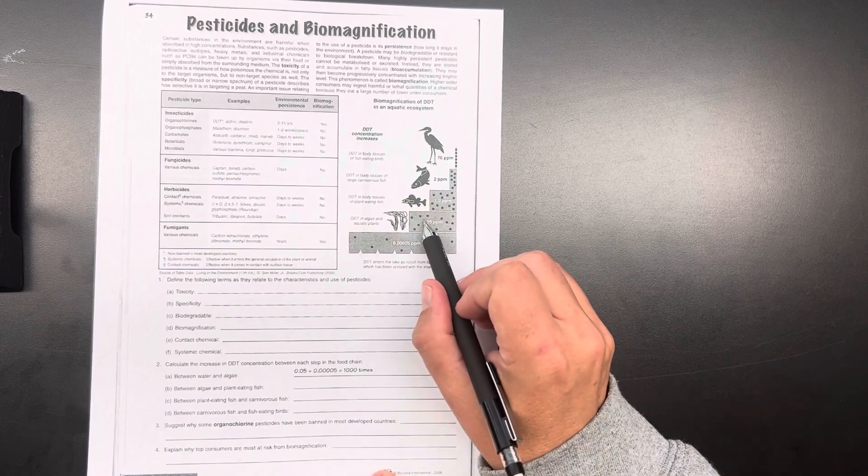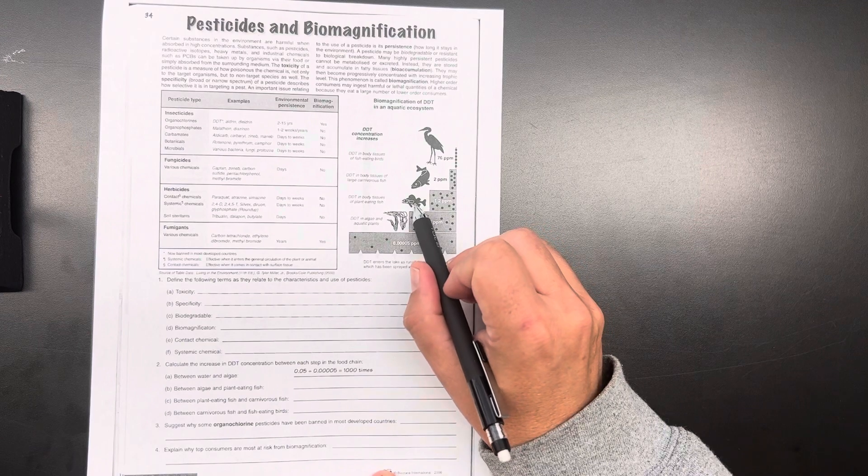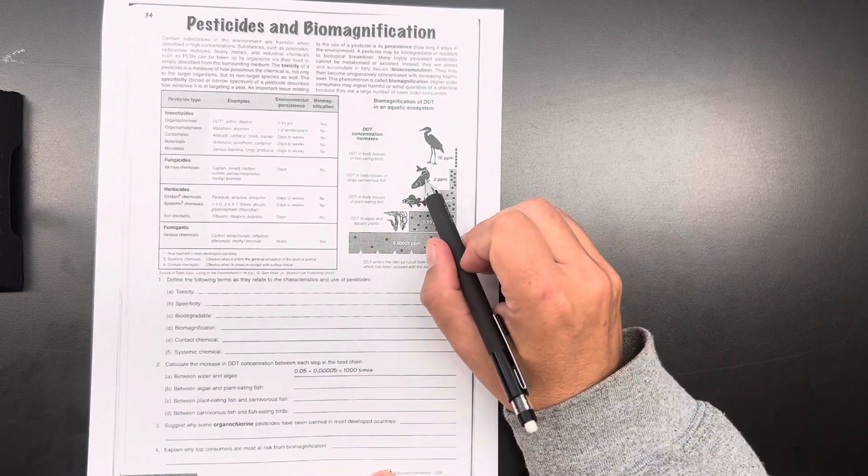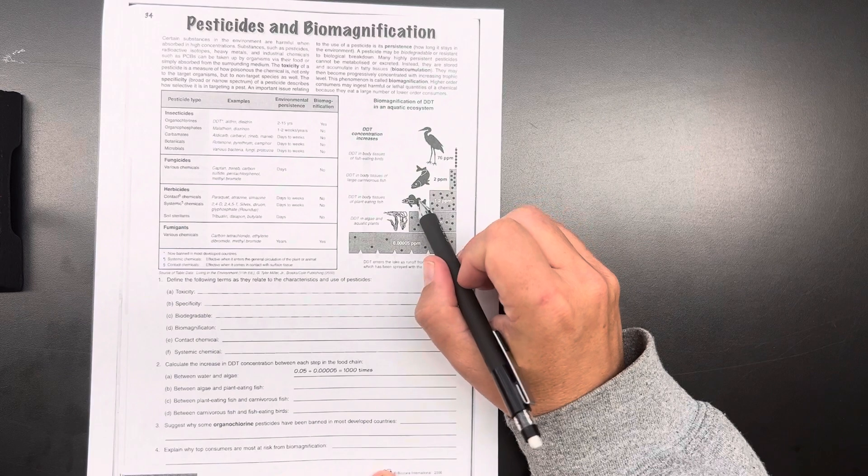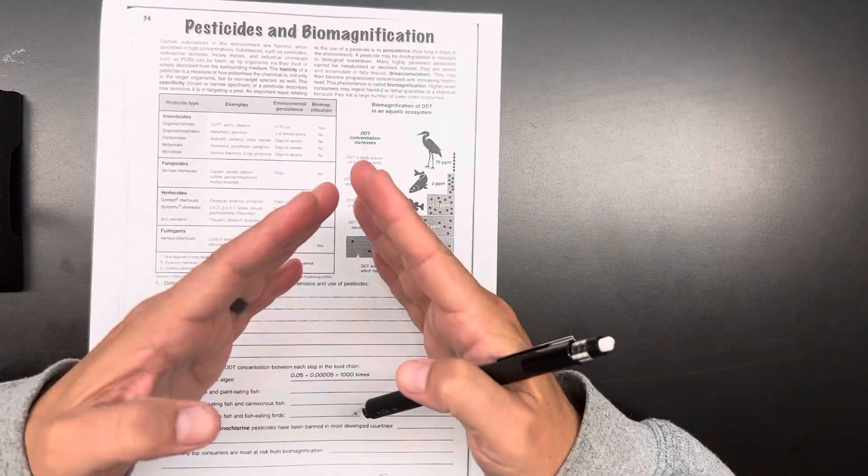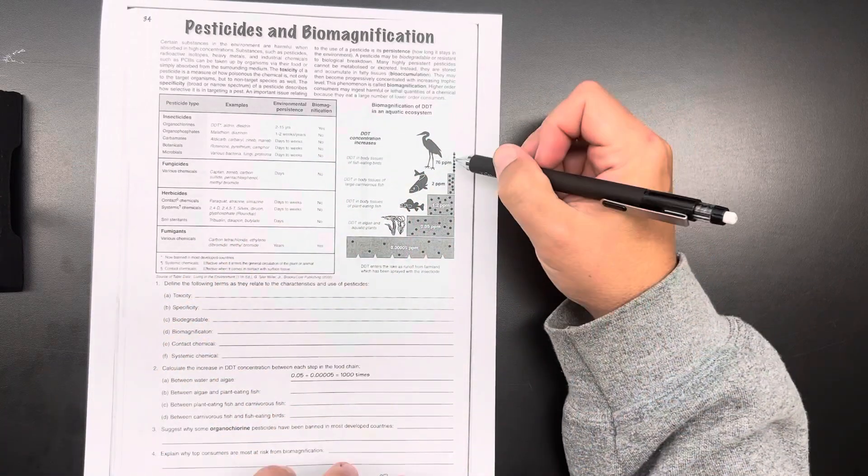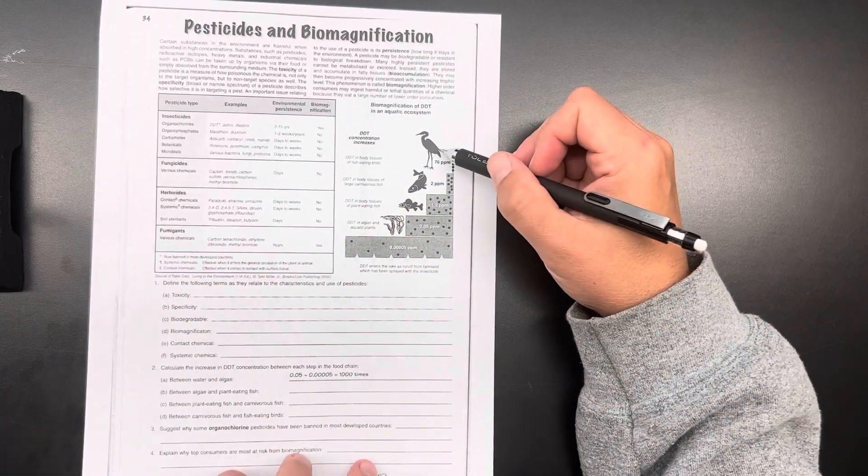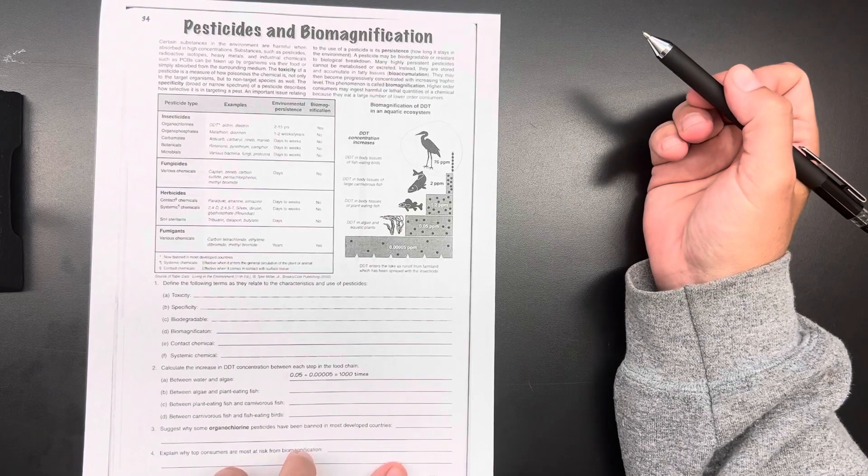But then it gets a little bit more accumulated in these fish, which eat all these plants. Larger fish eat the smaller fish. And all of those toxins just become more and more concentrated. So it's the most dangerous for these predators at the top.